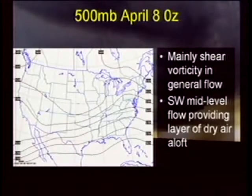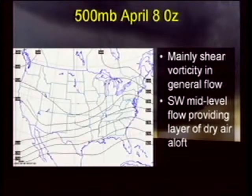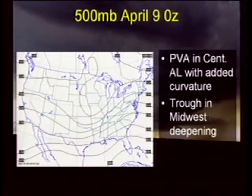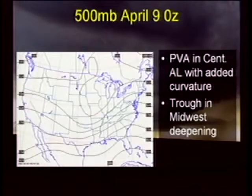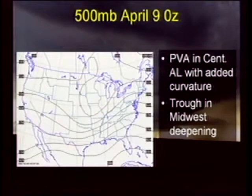At 500 millibars, looking for vorticity — shear vorticity and, probably more importantly, troughs and curvature vorticity as an uplifting mechanism. Also want to look for troughs for pockets of cool air that may rotate over the area, providing more instability by steepening mid-level lapse rates. Mainly shear vorticity in the general flow. Southwest mid-level flow was providing a layer of dry air aloft. By around the event time, you can see a better defined trough axis — PVA in central Alabama with added curvature. The trough in the Midwest seemed to be deepening, with our best positive vorticity out ahead of that in northern Mississippi, northern Alabama, into central Tennessee.